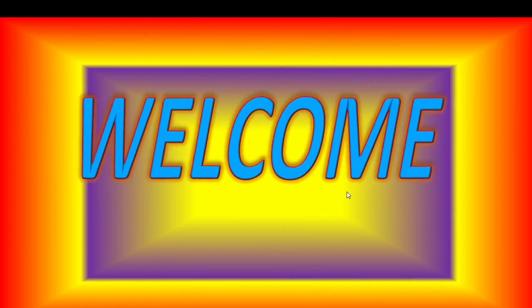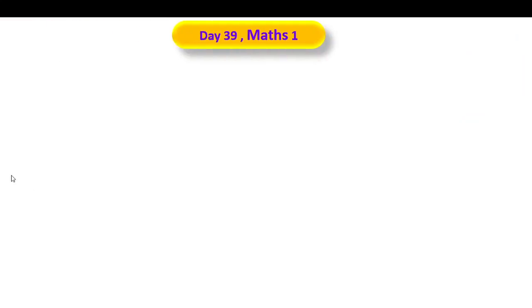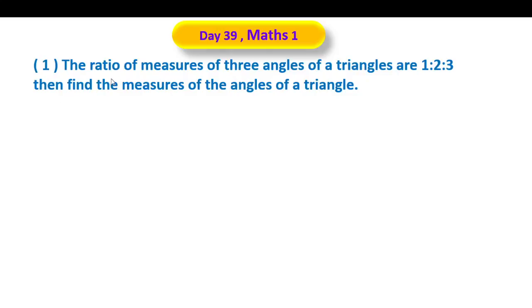Maths 1 Standard 10 Bridge course. Welcome back dear students to my YouTube channel. Day 39, Maths 1. First question: the ratio of measures of 3 angles of a triangle are 1 is to 2 is to 3. Find the measures of the angles of the triangle.